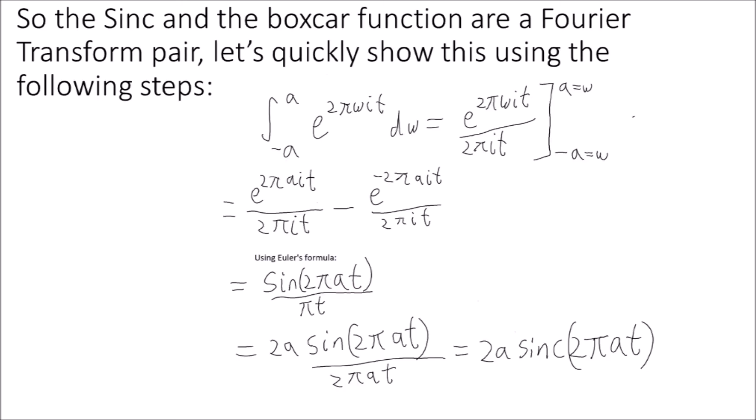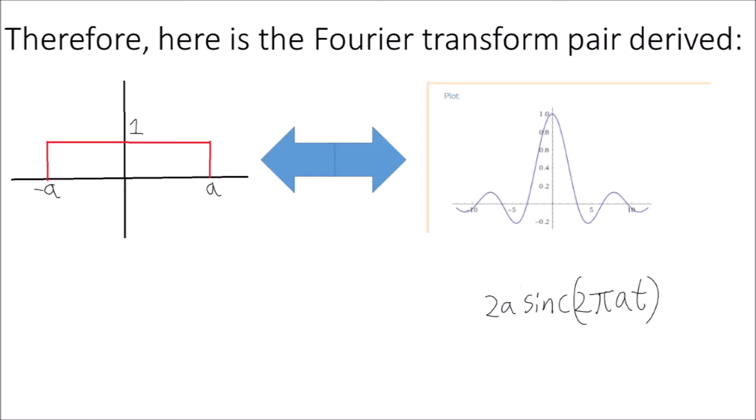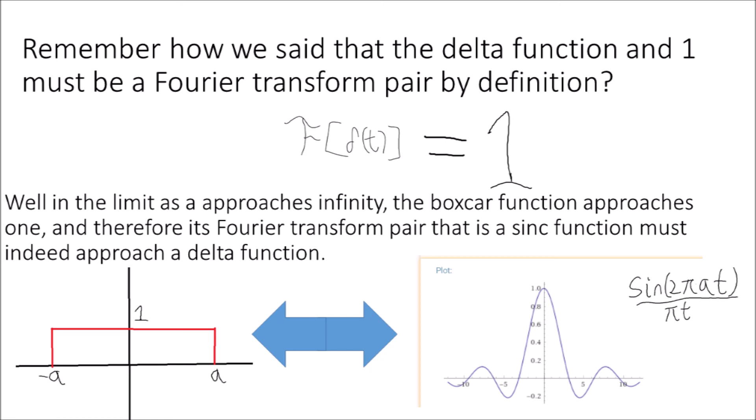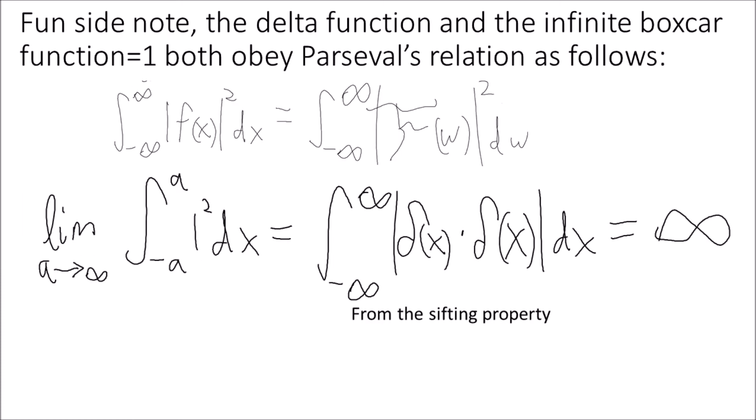By the convolution theorem, convolution in the time domain is multiplication in the frequency domain. Combining these equations, we can conclude that the Fourier transform of a delta function must be the multiplicative identity, 1. Therefore, the Dirac delta function and 1 must be a Fourier transform pair. The sinc and the boxcar function are also a Fourier transform pair — let's quickly show this. What happens in the limit as a approaches infinity? The boxcar function will become longer and longer, eventually becoming a constant function of 1. Since the delta function and 1 must be a Fourier transform pair, and the boxcar approaches 1, the sinc must indeed approach a delta function. The delta function and the infinite boxcar function of 1 both obey Parseval's relation.